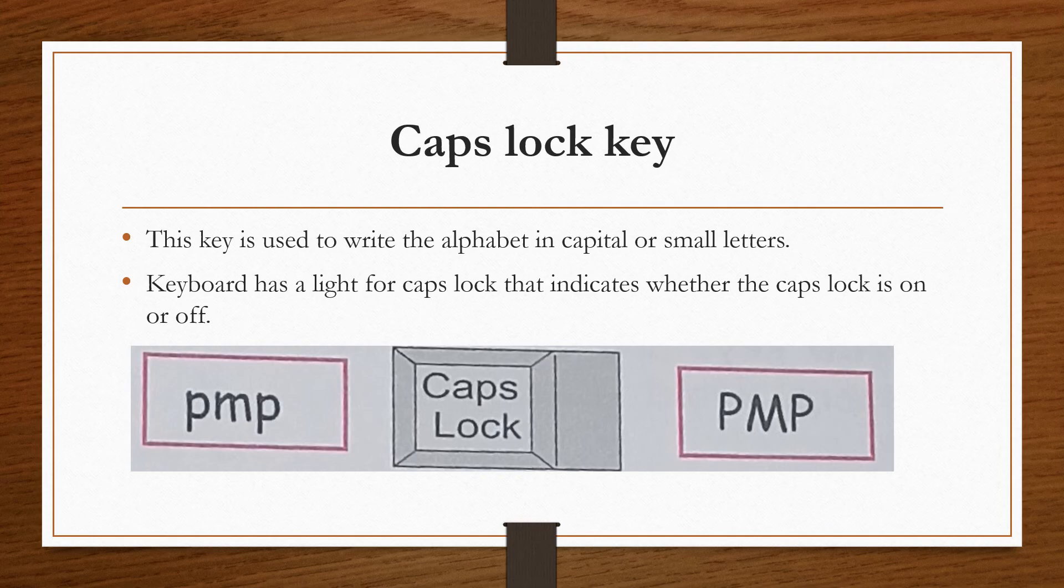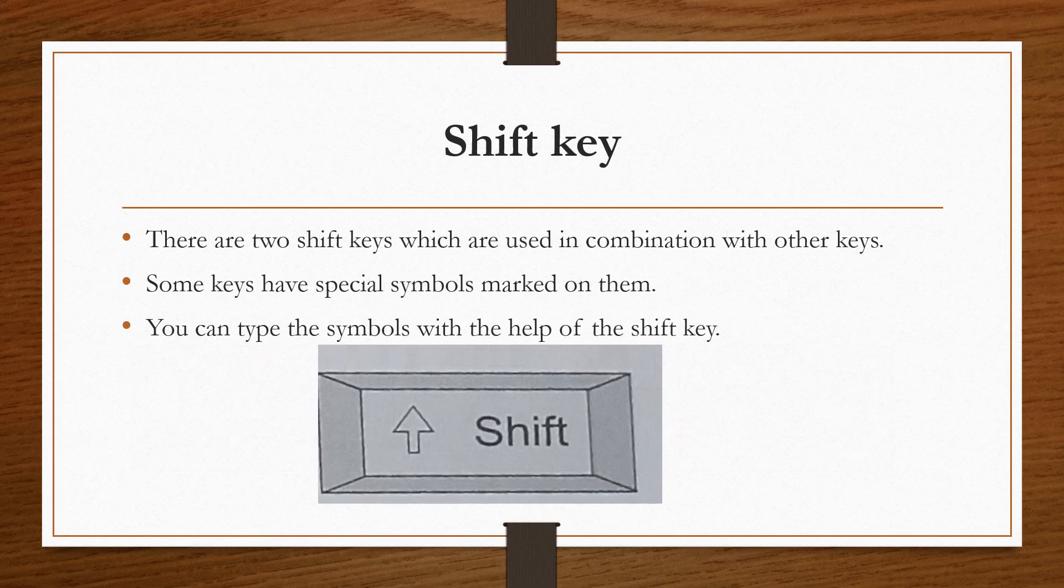Now how come in capital or small letters? There is in this key a light button. So when you press it on, when the light is visible, then it will type in capital letters, or else it will type in small letters. So keyboard has a light for caps lock. It will indicate whether the caps lock is on or off.